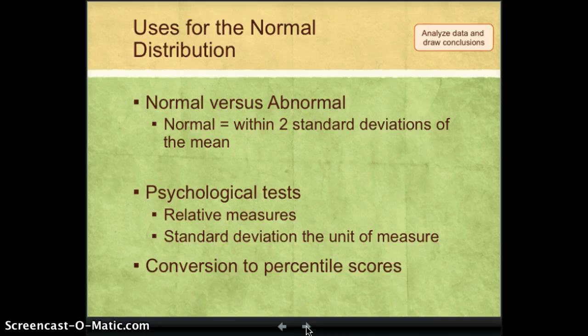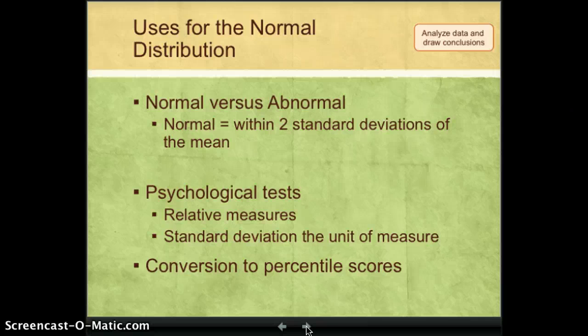So this normal distribution is used quite frequently in psychological tests. They give us a relative measure that standard deviation helps us to determine if a score is normal or abnormal, if it's high or low. And quite frequently, we convert those scores on the normal distribution into something called percentile scores.